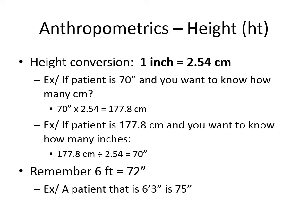For height conversion: one inch equals 2.54 centimeters. Since this is nutrition science, research articles and computer results for patients will often use the metric system. For example, a patient who is 70 inches tall: 70 × 2.54 = 177.8 centimeters. Conversely, 177.8 ÷ 2.54 = 70 inches. Remember that 6 feet is 72 inches, not 60 inches — 60 inches is 5 feet tall.